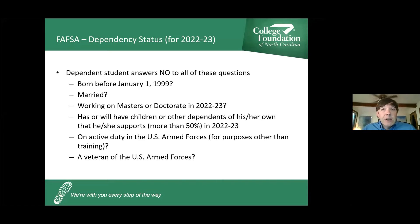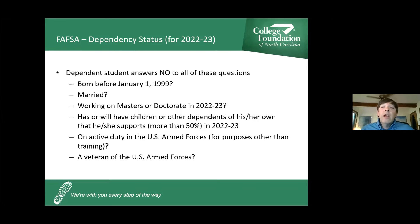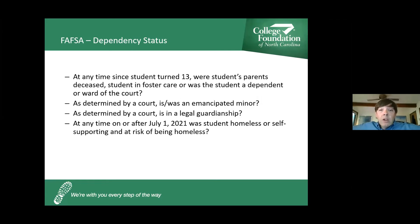Most students are dependent, meaning they will file the 2022-23 FAFSA with their parents. Dependent students answer no to all independence questions: not born before January 1, 1999; not married; not working on a graduate degree; no children or dependents of their own; not in the military or a veteran; not an emancipated minor; not under legal guardianship; and have not been at risk of homelessness as defined by the McKinney-Vento Act.